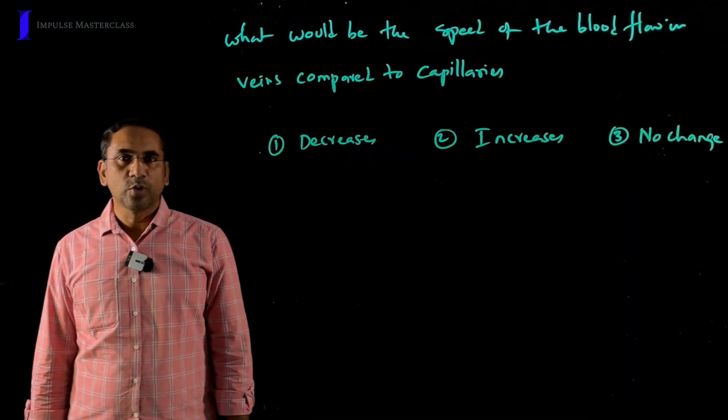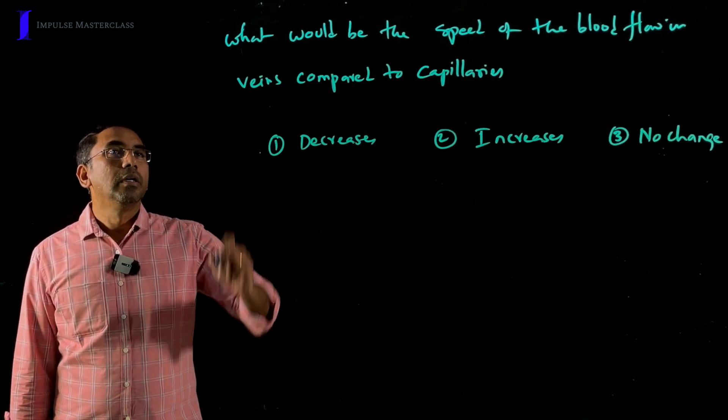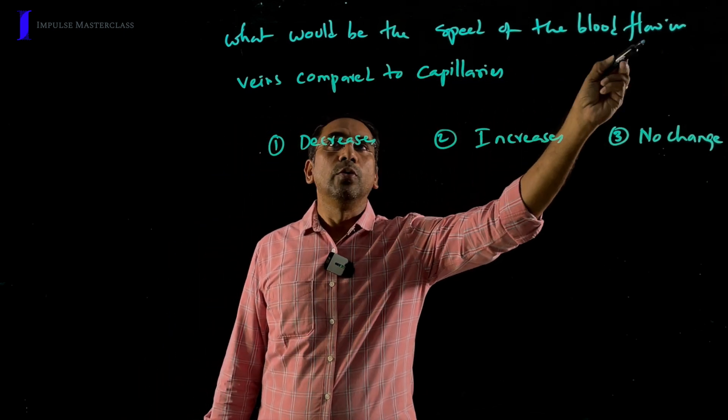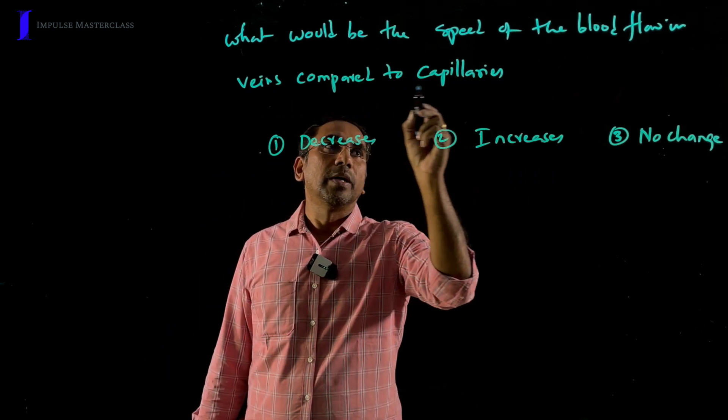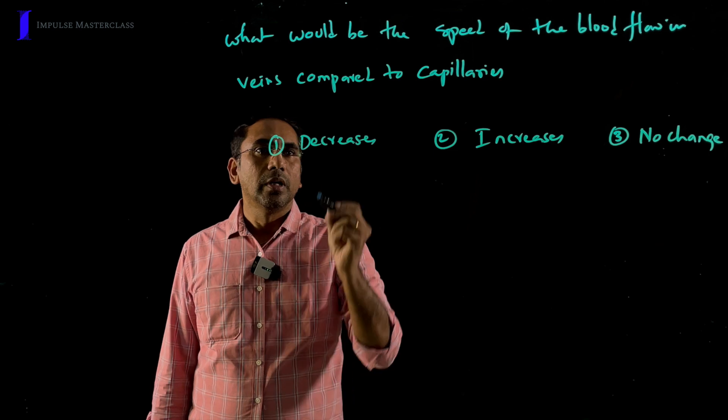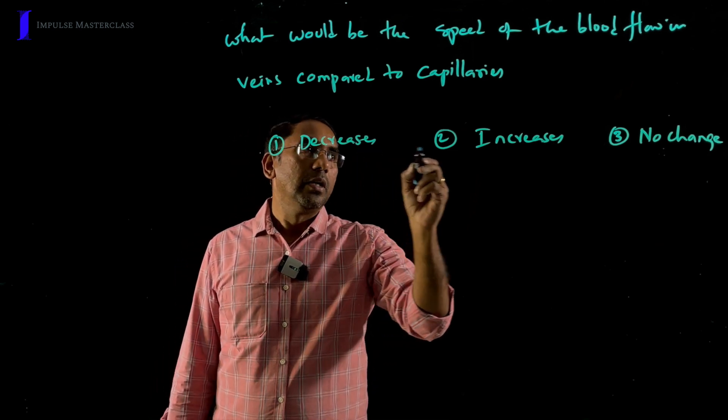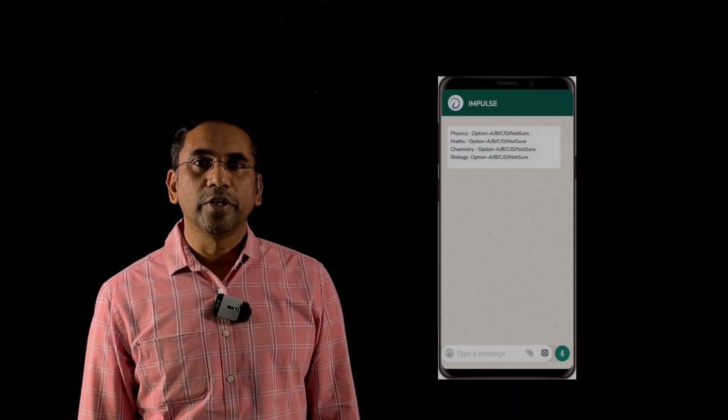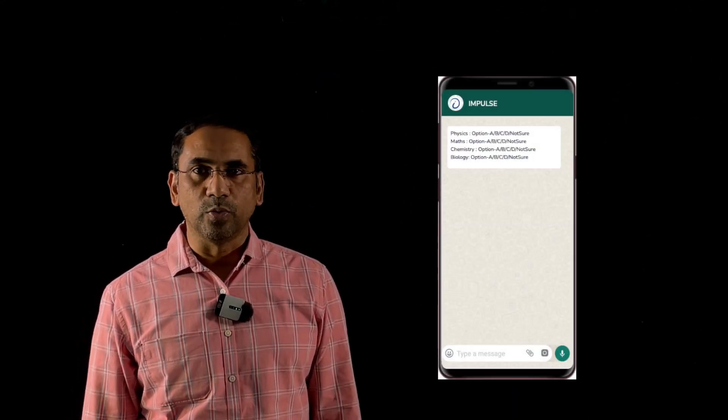Students, now it's time to solve a problem based on the explained concept. Look at this question. What would be the speed of the blood flow in veins when compared to capillaries? Is the speed decreases or increases or no change? If you know the answer, please share your answer to Impulse WhatsApp group. We will provide you video explanation for this. See you next week. Thank you.